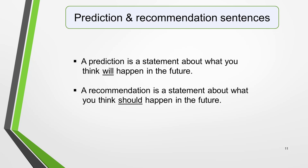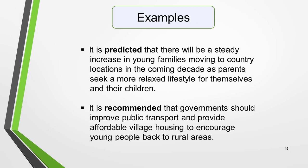Finally, we'll consider the optional prediction or recommendation sentence. A prediction is a statement about what you think will happen in the future. Here are examples of each type of sentence you could use for this essay. Prediction: 'It is predicted that there will be a steady increase in young families moving to country locations in the coming decade as parents seek a more relaxed lifestyle for themselves and their children.' Recommendation: 'It is recommended that governments should improve public transport and provide affordable village housing to encourage young people back to rural areas.' Our essay is already well over the 250 minimum word limit, so we don't need to add either of these extra sentences.